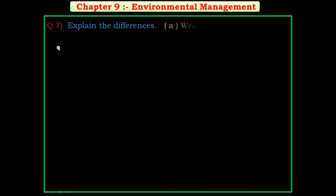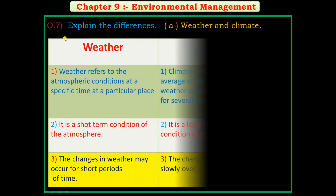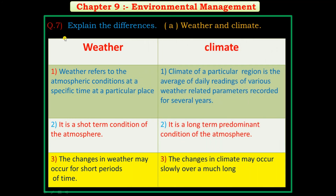Question number 7: explain the difference between weather and climate. You have to make two columns — first column for weather and second column for climate. First point in weather: weather refers to the atmospheric condition at a specific time at a particular place. First point in climate: climate of a particular region is the average of daily readings of various weather-related parameters recorded for several years.